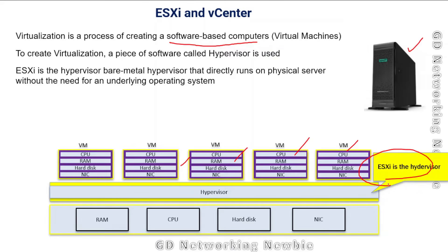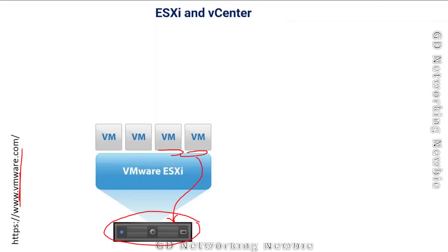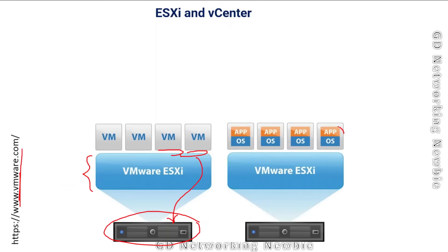Looking at a diagram from the VMware website: we have the hardware, on which we install VMware ESXi. With the help of ESXi we can create multiple virtual machines. These virtual machines share resources from the physical machine - RAM, network interface card, hard drives - and on each virtual machine they can have their own operating system and application programs.